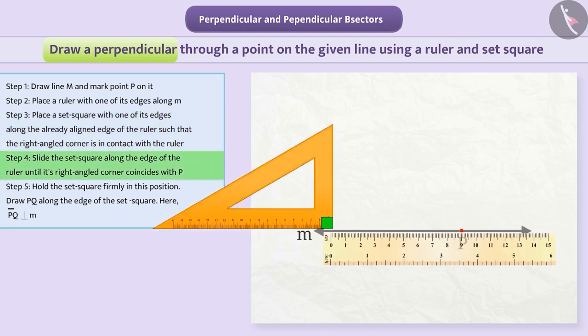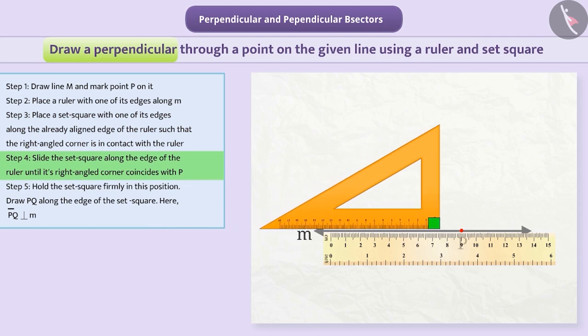Step 4: Slide the set square along the edge of the ruler until its right-angled corner coincides with P.